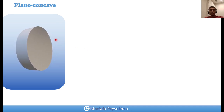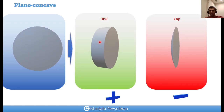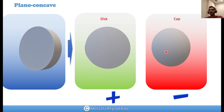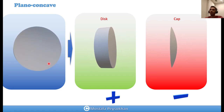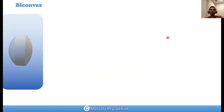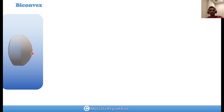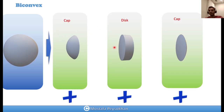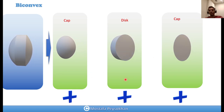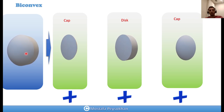For a plano-concave lens, which has one flat surface and one concave surface, we can decompose it again into a disc and a cap, but in this case the cap is negative because we remove material from the disc — so it's disc minus cap. For a biconvex lens with two convex surfaces having different or equal radii of curvature, we decompose it into a cap, a disc in the middle, and another cap — all three with positive values.